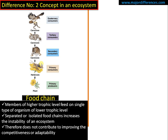Therefore such isolated food chains can cause instability in an ecosystem, because if this snake is missing, the chance of survival of this eagle will be very difficult. Isolated or separated food chains cause instability of an ecosystem.